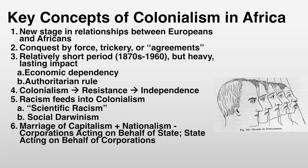Racism feeds into colonialism. There's something called scientific racism and social Darwinism — the idea of Darwin's evolution, survival of the fittest, applied to a human scale, saying certain people of the world are best suited for ruling, based exclusively on race. Scientific racism in the United States was often tied up in justifying slavery, and the justification of colonialism was very similar. Colonialism represents a marriage of capitalism and nationalism: corporations are often acting on behalf of the state, and the state is often acting on behalf of corporations.